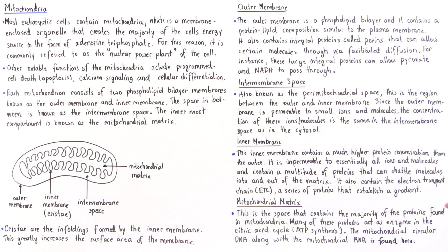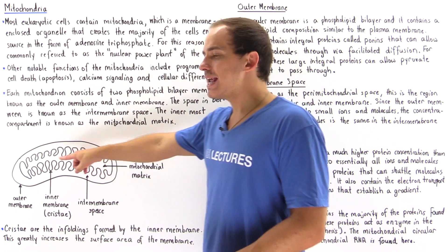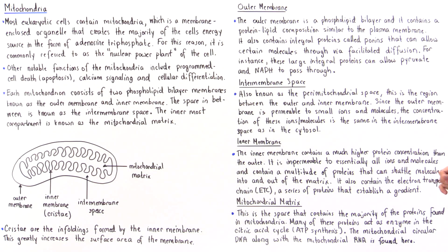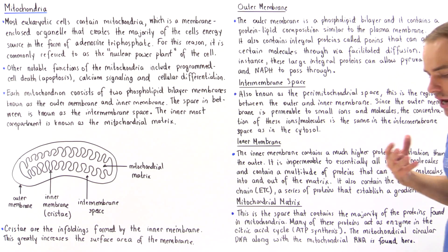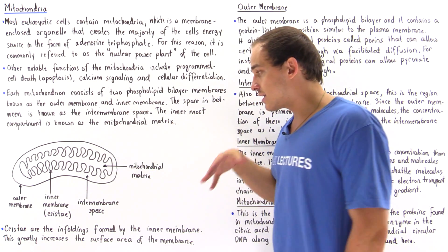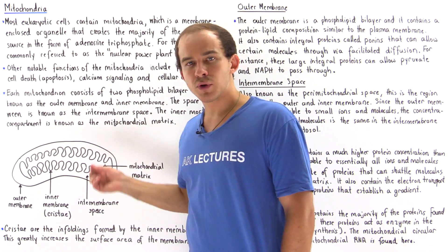The intermembrane space, also known as the perimitochondrial space, is the region between the outer and inner membranes. Since the outer membrane is permeable to small ions and molecules, the concentration of ions and molecules in the cytosol is the same as inside the intermembrane space.